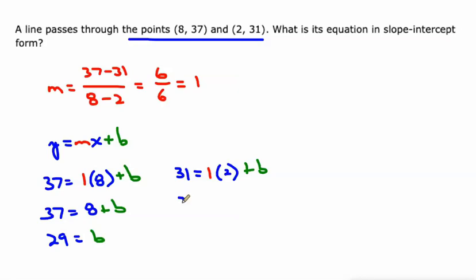And then multiply 1 times 2, and you get 2. And then subtract 2 from both sides, and you still get 29.